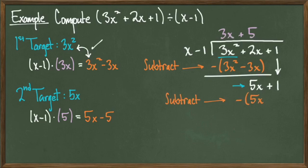And then we are going to subtract the product from 5x plus 1. Doing so gives us an answer of 6. There are no more terms to drop down, so this tells us that we are done with the long division.